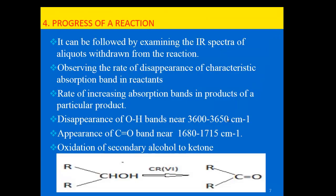The fourth application is monitoring the progress of a reaction. We can follow a reaction by examining the IR spectra of aliquots withdrawn from the reaction mixture at different time intervals. For example, in the oxidation of a secondary alcohol using a chromium oxidizing agent, the O–H bond absorbs near 3600–3650 per centimeter, and its peak will disappear as the reaction proceeds.